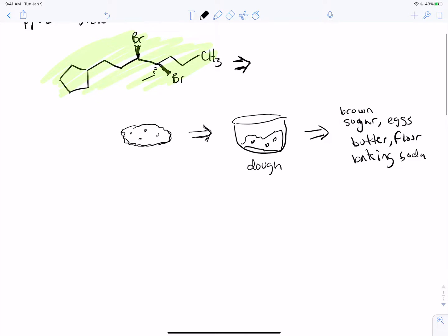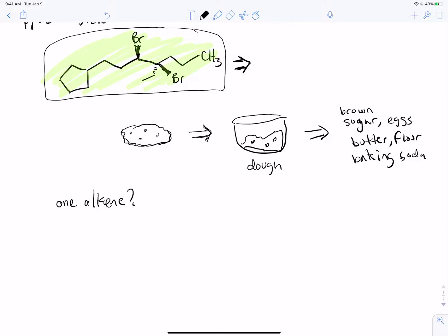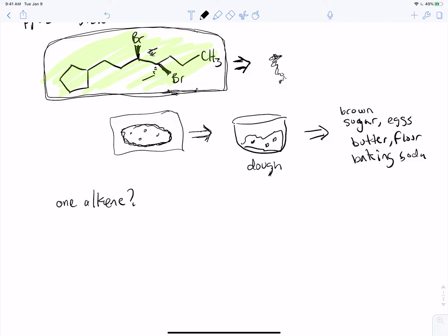So the way this question is phrased, it's saying propose — what's one alkene we could have started with that we could use to make this product? What we're saying is we know that we ended up with this product, just like we knew we ended up with a chocolate chip cookie. And here for the molecule, we're asking, well, if we ended up with this and we started with an alkene, what did that alkene look like? The product informs what we started with, and it informs the type of alkene that we started with.